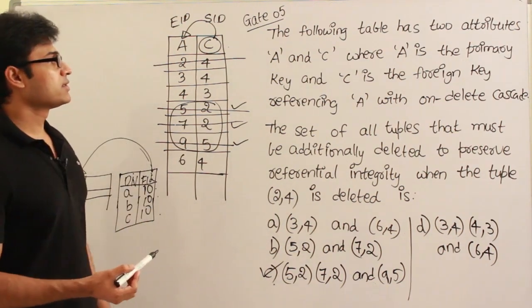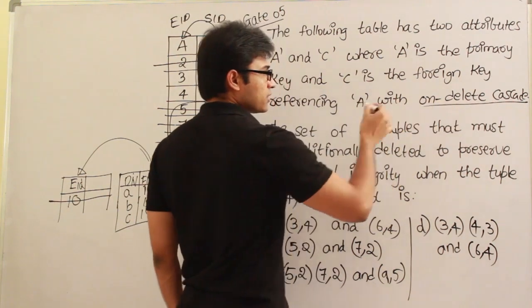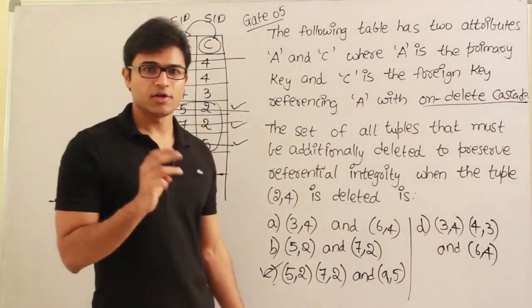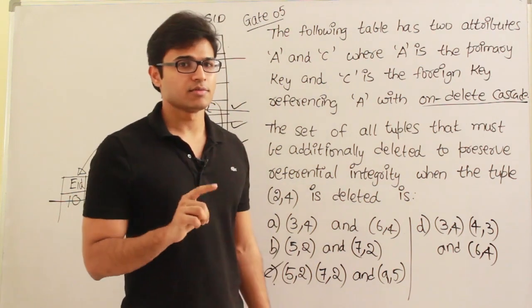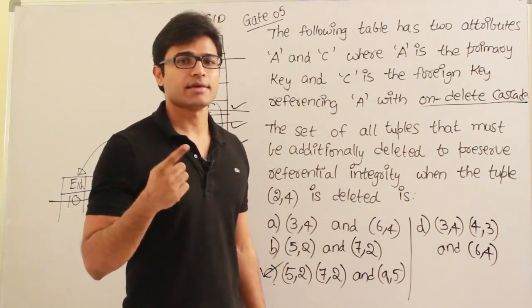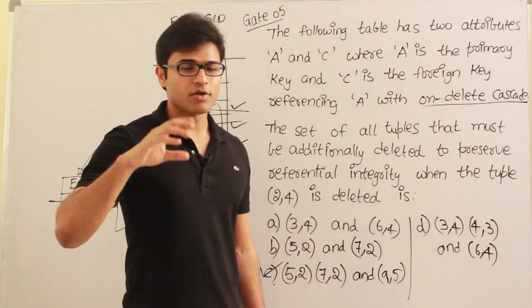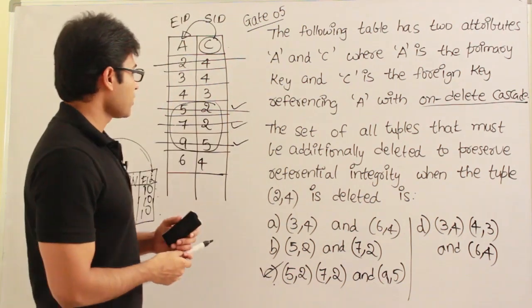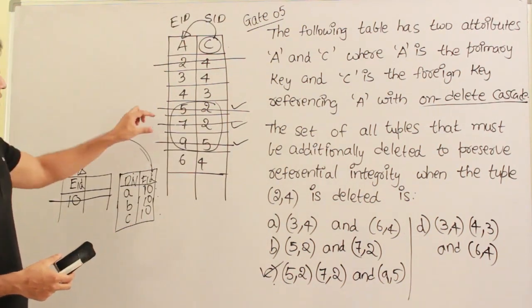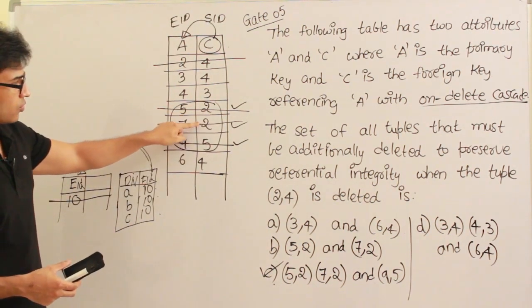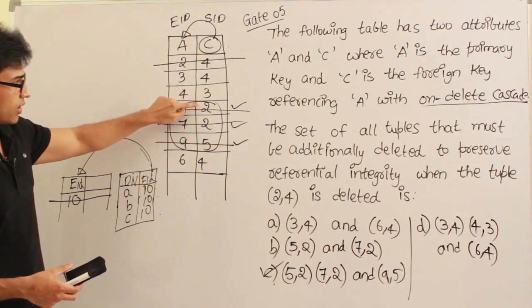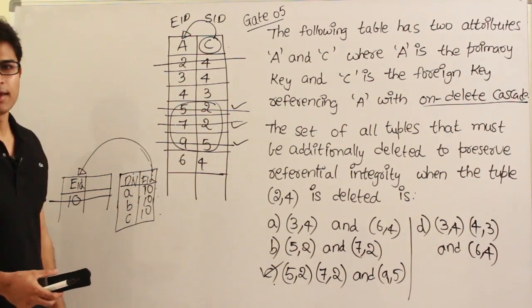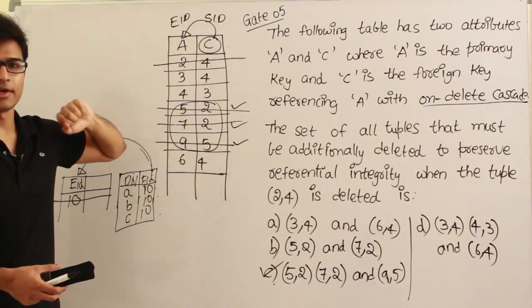On delete cascade is one option. We have three options whenever there is any violation of integrity. One is reject the action — don't delete anything. Second is on delete cascade — delete everything which is violating. Third is on delete nullify — wherever it is referring to 2 and 5, since those are going to be deleted, you can put null in those places and let those rows remain. A foreign key can definitely take null values; a primary key cannot.